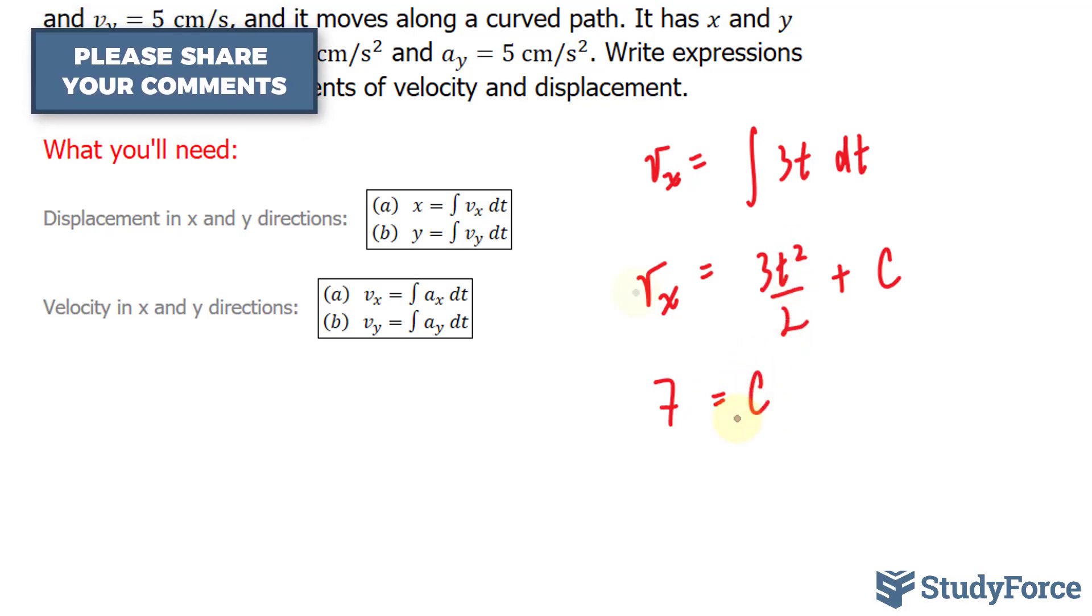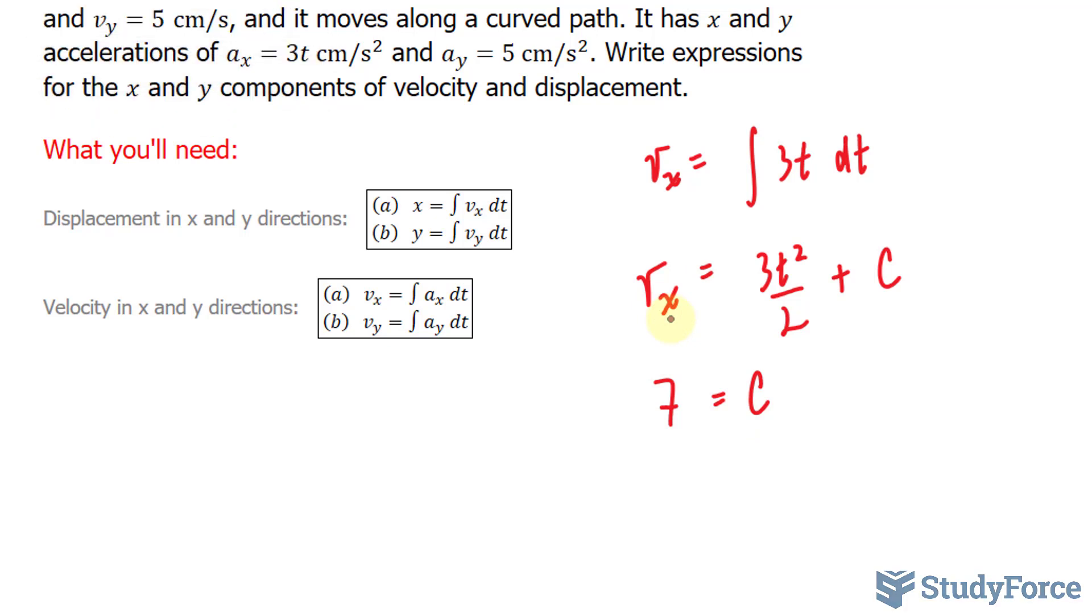So our constant here for v_x is 7, giving us an equation v_x equals 3t squared over 2 plus 7. Let's go ahead and do the same thing now for v_y.